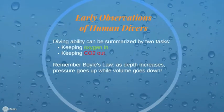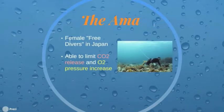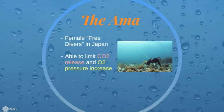Observations of human diving ability provided early evidence of the limits and abilities of human physiology underwater. This ability can be summarized by two tasks: keeping oxygen in and CO2 out. The most famous examples of underwater adaptation are the Ama divers of Japan, who have been freediving for over two millennia. The Ama, who dive with minimal equipment, take deep, slow breaths before submerging. This was thought to do two things: slow the release of oxygen at depth, as well as control the release of CO2 in the lungs.